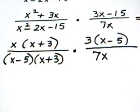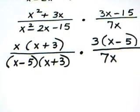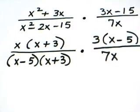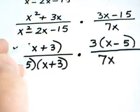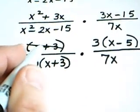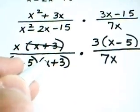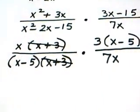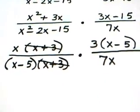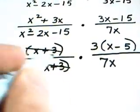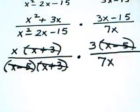x plus 3 from this numerator and x plus 3 from this denominator cancel out. We similarly cancel the x minus 5s.